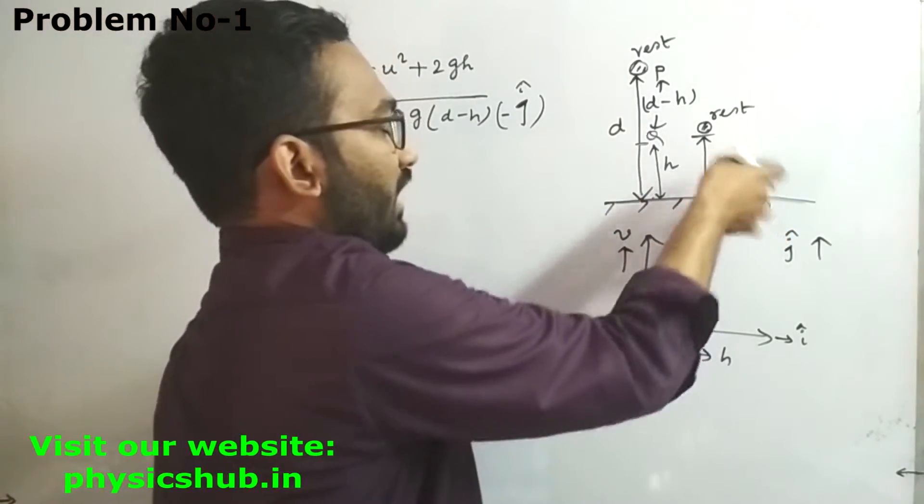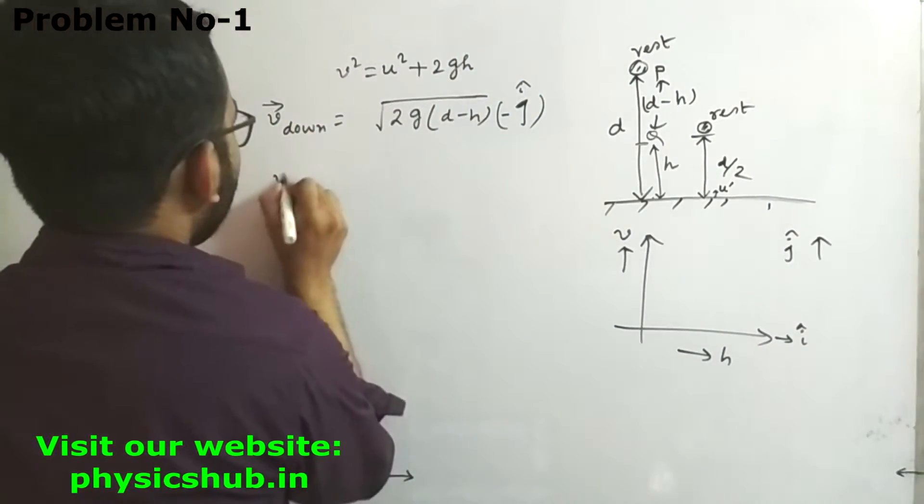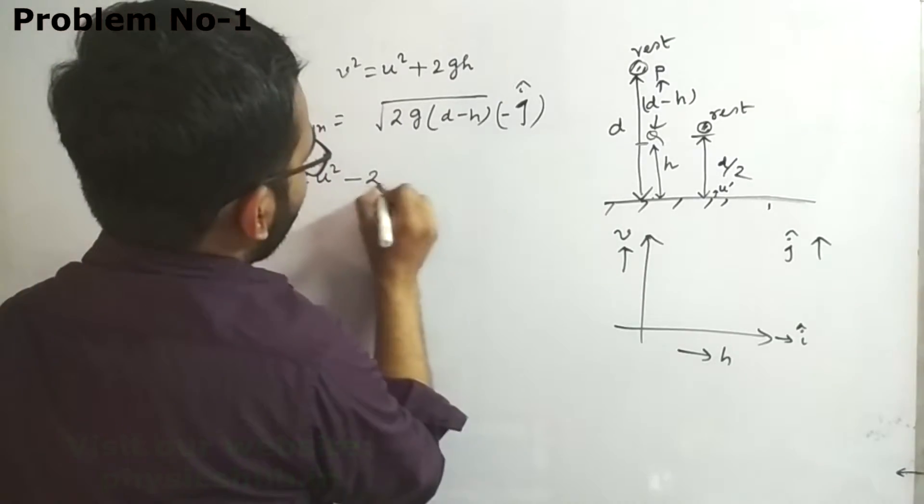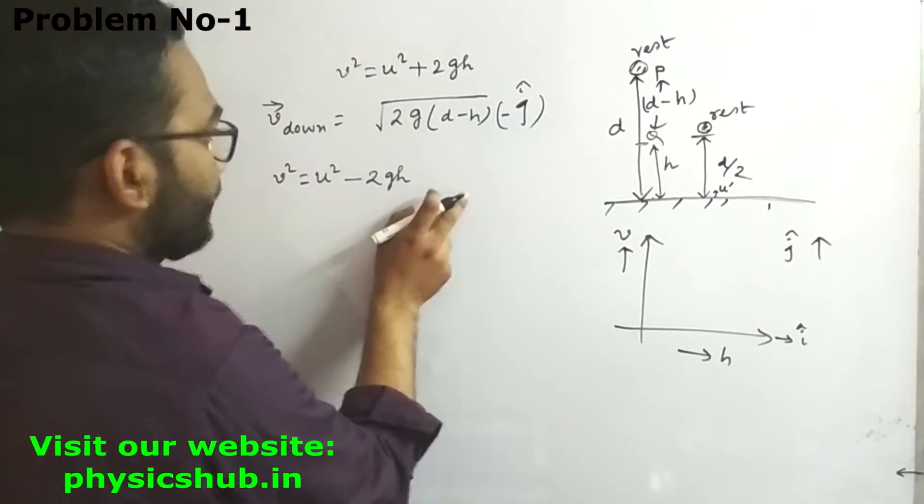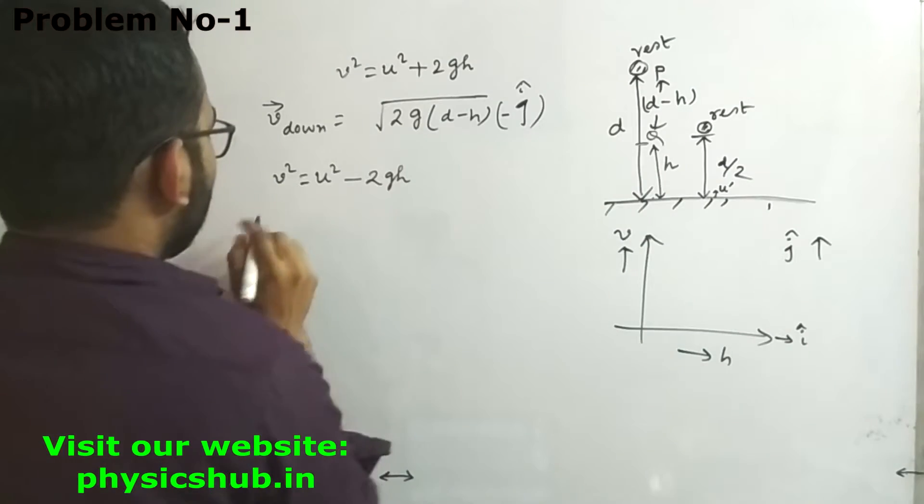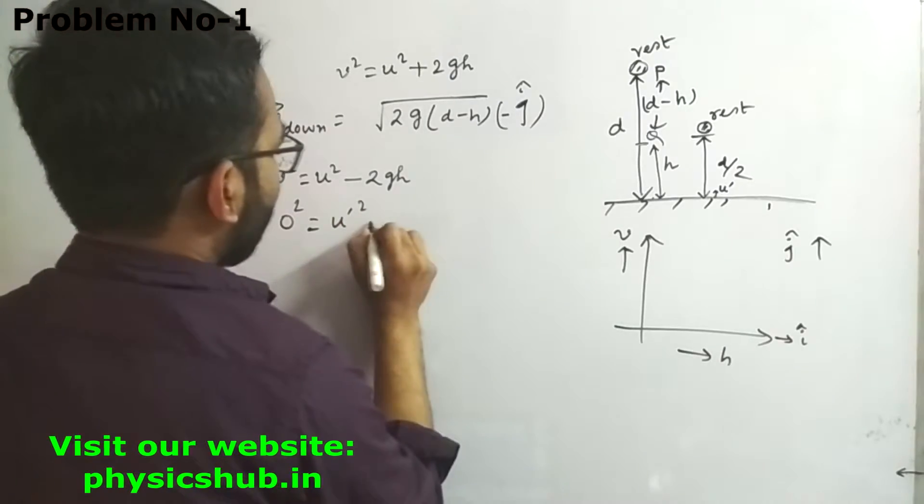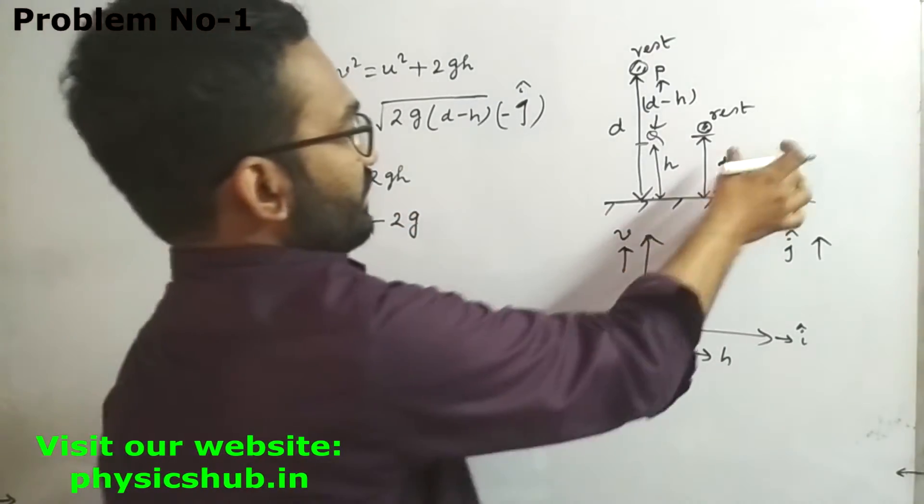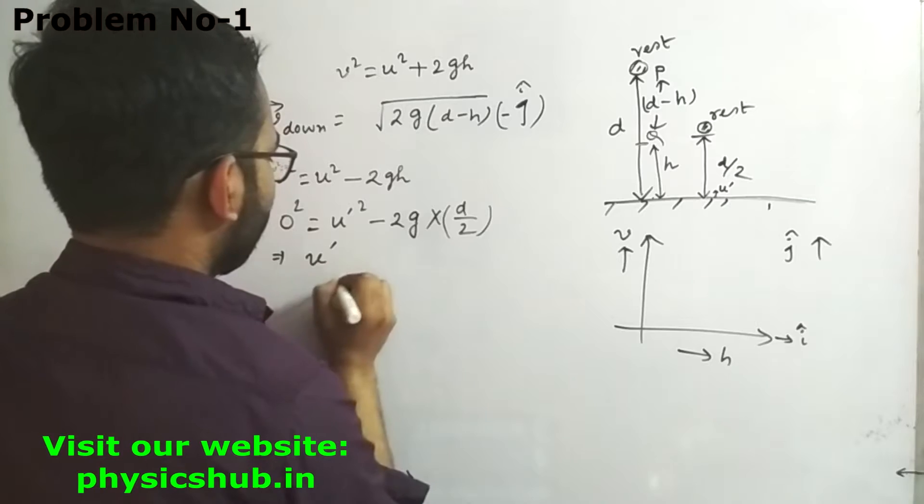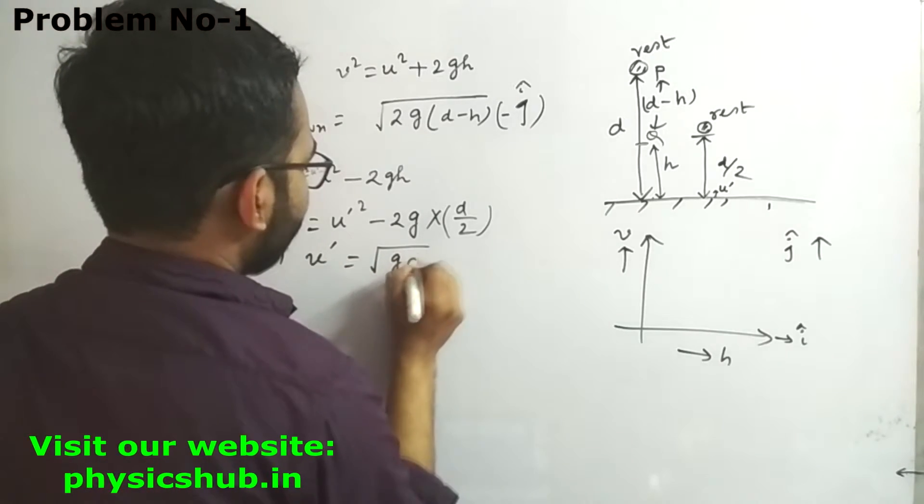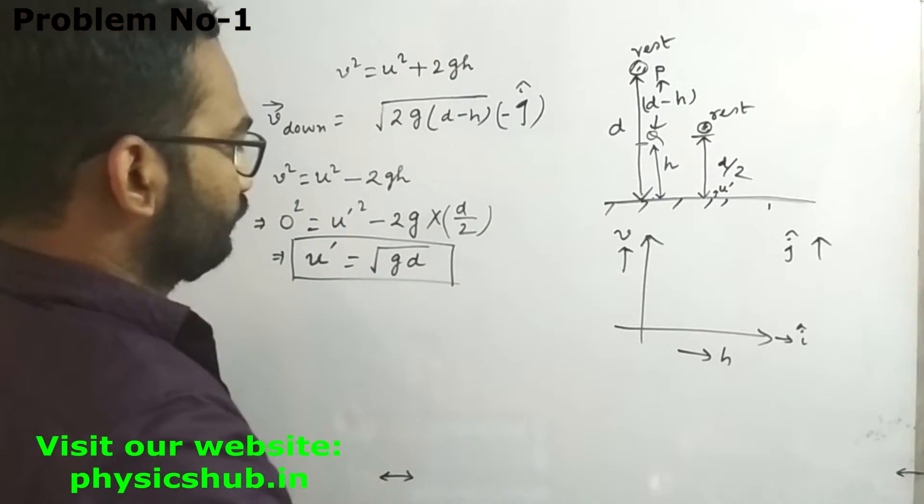After reaching height d/2, it's at rest. We use the equation v² = u² - 2gh since the ball is moving upward. At rest, v = 0, so 0 = u'² - 2gh. Here h = d/2. Therefore, u' = √(gd).